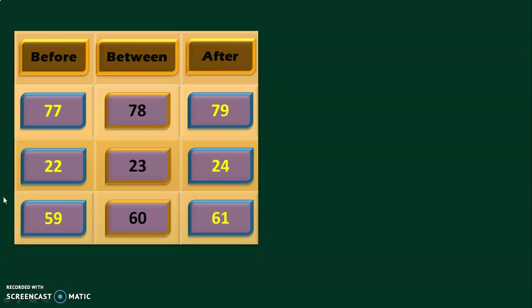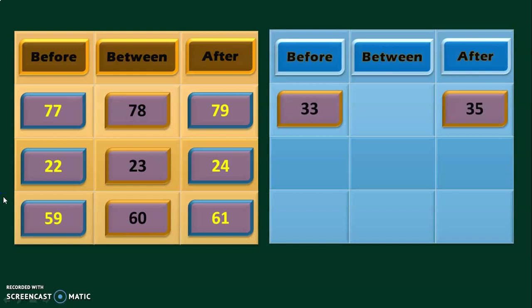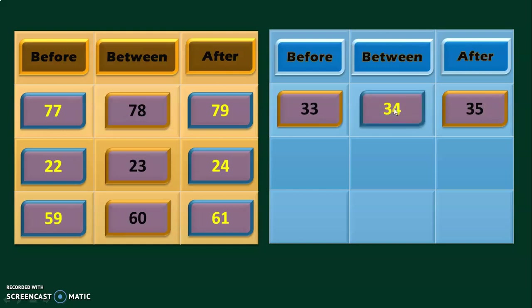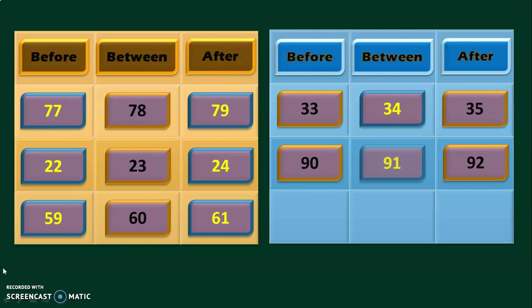Let us move on to another type of questioning method. Here, I have given the before and after numbers and we will have to find out the between number. The before number is 33 and the after number is 35. What is the between number? It is 34. The next question: the numbers given are 90 and 92. What is the number between 90 and 92? It is 91.